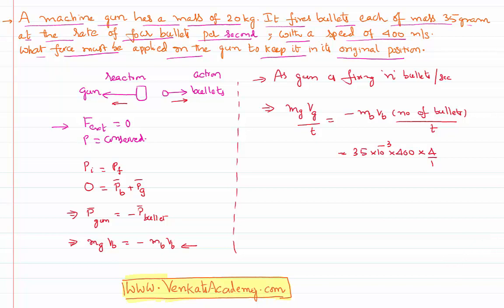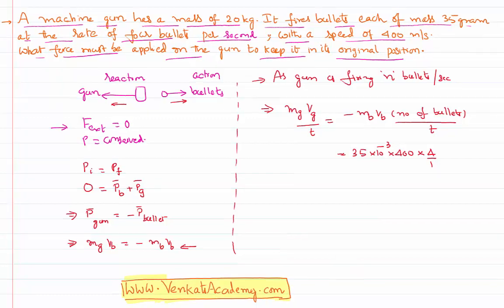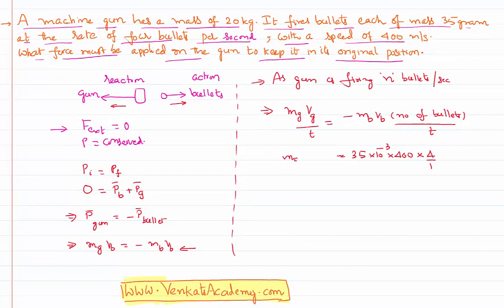number of bullets per second is 4 per 1, and mass of the gun times velocity of the gun divided by time, this is nothing but momentum of the gun by time. That is, if I calculate it, minus 56 newtons.